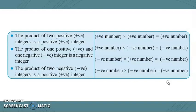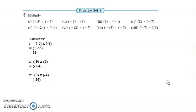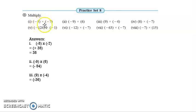Before we move on to Practice Set 8, a few instructions: you need to maintain a notebook for maths and solve all the sums we see in the video in that notebook. Practice Set 8, Question 1: minus 5 multiplied by minus 7. Five multiplied by seven is 35. This is one negative integer multiplied by another negative integer — negative multiplied by negative gives positive. So the answer is positive 35.